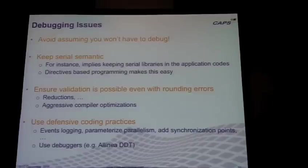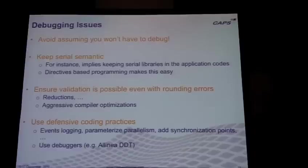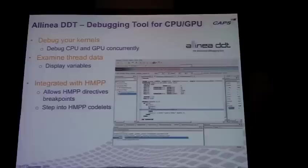The debugging issue is actually a very serious one. The fact that you keep a serial code with directives solves part of the problem: you can always run your code on the CPU, check if it's giving you the right answer, and then move to parallel execution. If you have a bug, it's probably a parallel bug — some lack of synchronization, race condition, and so on. This is one of the great advantages of directive-based approaches. However, you have to keep your serial library in your code. And of course you want to use debuggers — HMPP has an agreement with Alinea DDT, which has been made HMPP-friendly so you don't have to go into the low-level generated code to debug.